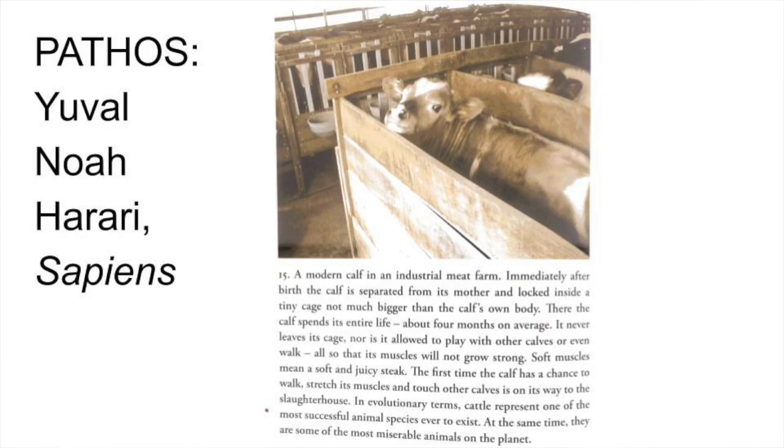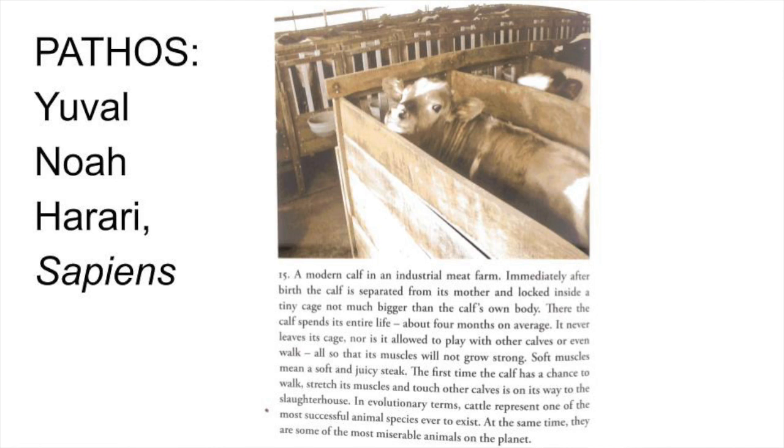Lastly, pathos — the emotional appeal. With pathos, we make our readers feel emotionally toward a subject to get them to act. It's not always used for good; some people use pathos to get people to do things against their own interests. Pathos is the most powerful appeal because it causes the strongest reaction in readers, so we must use it to support ideas we truly believe in. For example, Yuval Noah Harari in 'Sapiens' argues that there is a lot of harm in factory farming. An image of a sad-looking cow paired with a sentence like 'immediately after birth the calf is separated from its mother and locked inside a tiny cage not much bigger than the calf's own body' is carefully designed to create an emotional reaction — phrases like 'immediately after birth' and 'separated from its mother' provoke a strong emotional response in most readers.